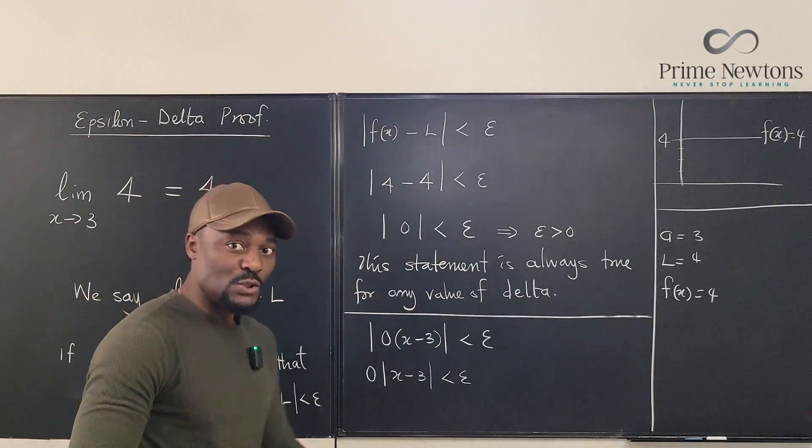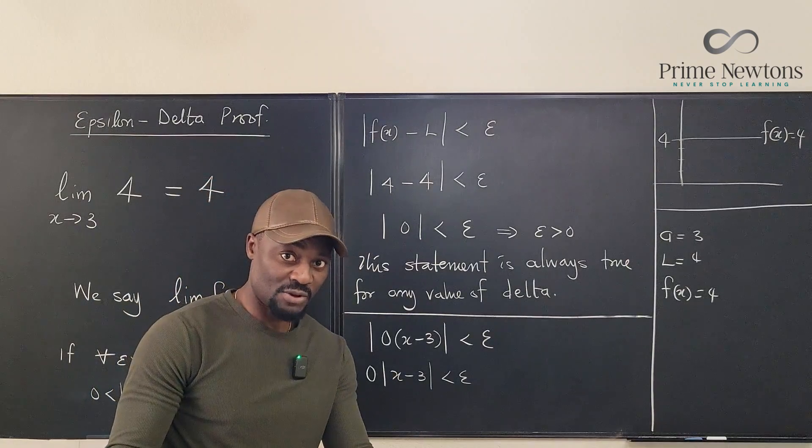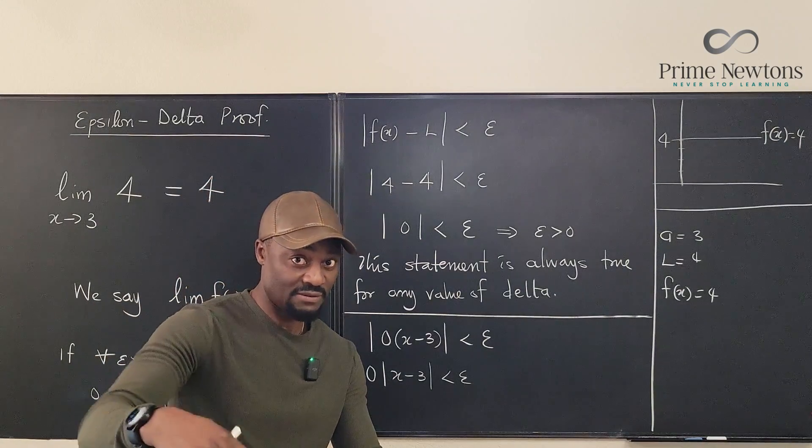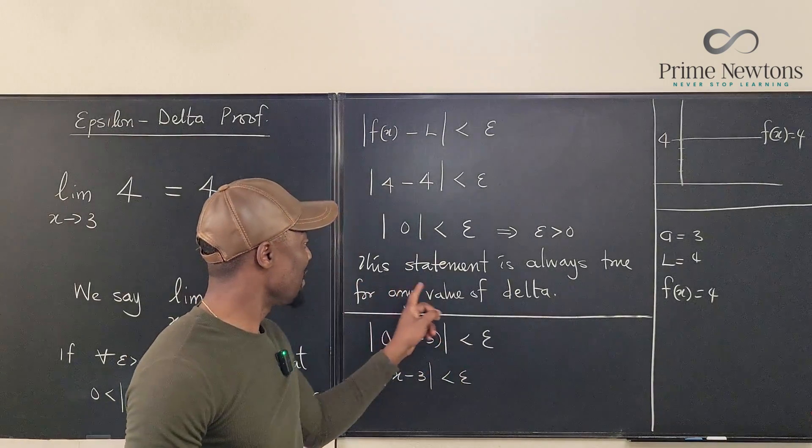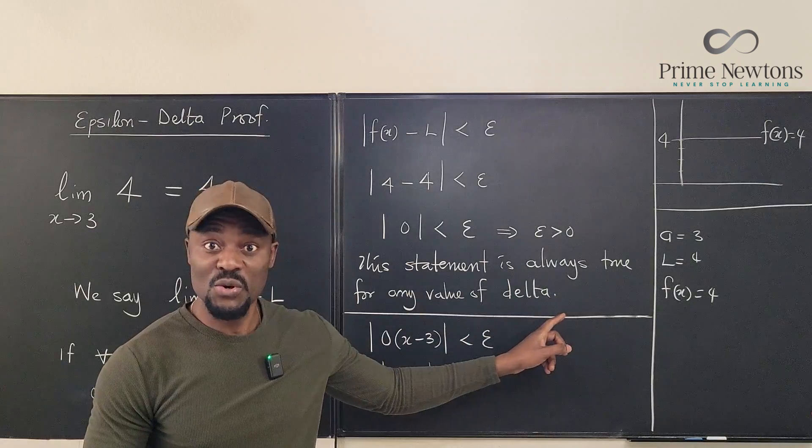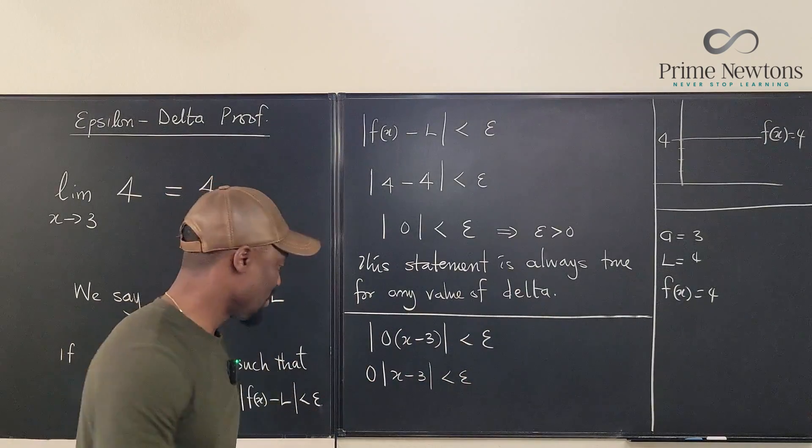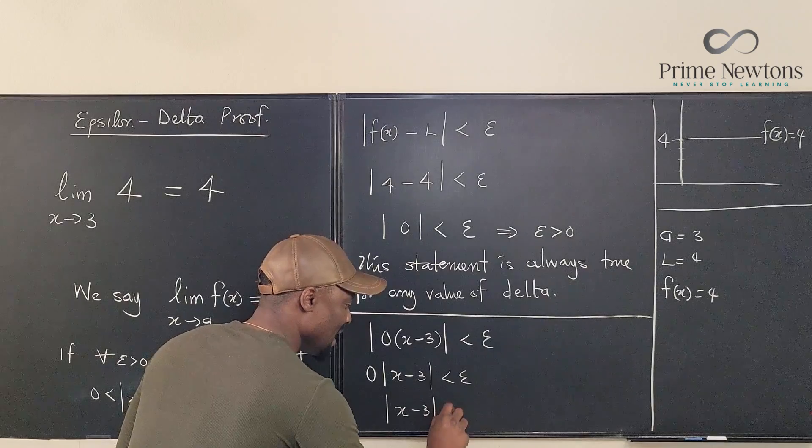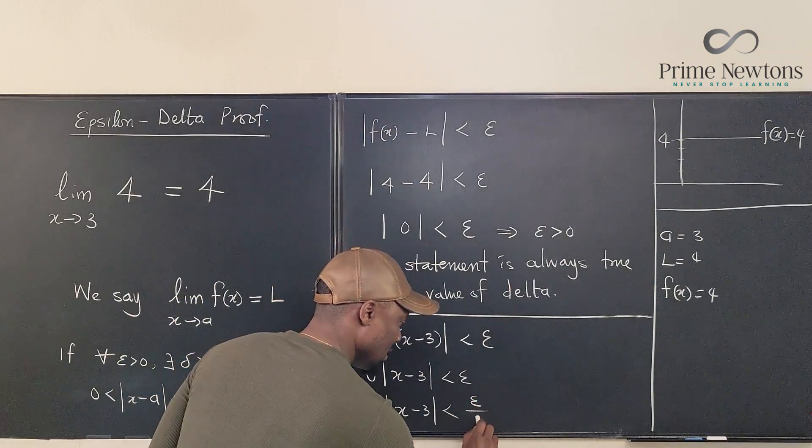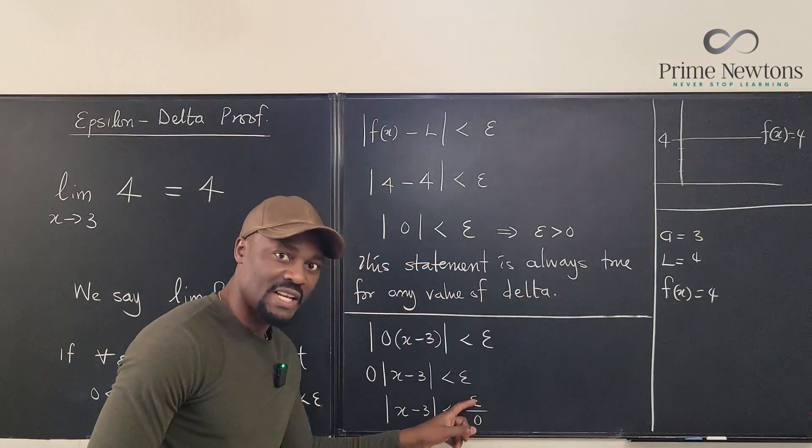You see that? Now do not divide by 0. Okay? Don't put it in the comments that I divided by 0. But assuming you want to show why you have an unlimited number that any value of delta is going to work, let's guess what our delta is going to be. Well look at this. This is going to be |x minus 3| is less than epsilon divided by 0. What do you get here?